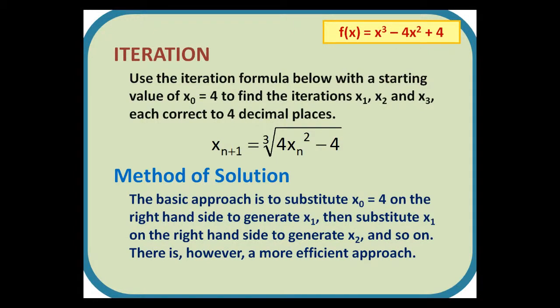The basic approach is to substitute x0 equals 4 on the right-hand side to generate x1, then substitute x1 on the right-hand side to generate x2, and so on. There is, however, a more efficient approach.